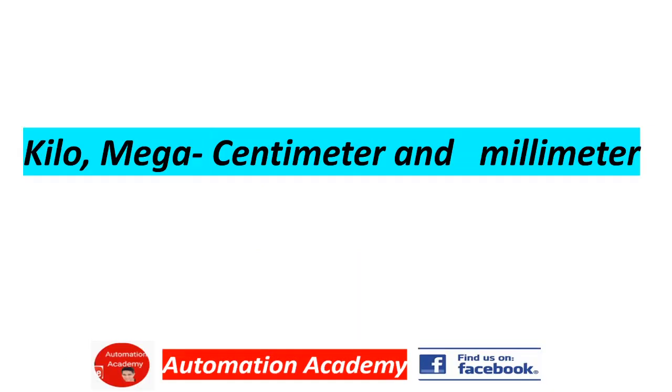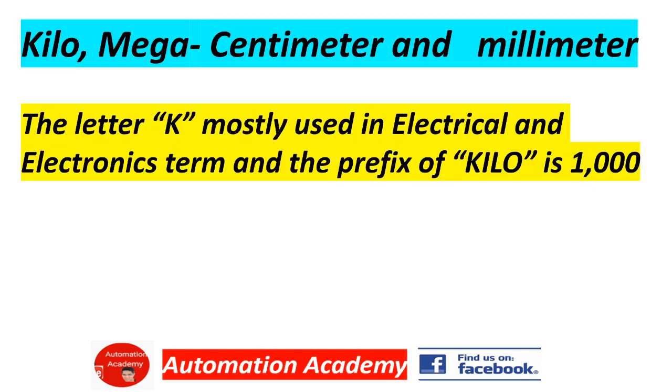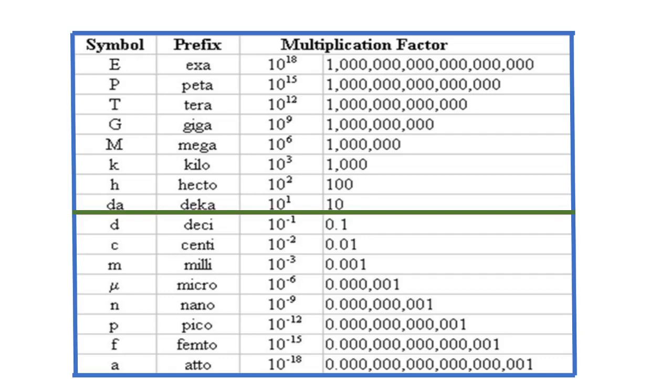Our next topic is kilo, mega, centimeter, and millimeter. The letter K is mostly used in electrical and electronics terms, and the prefix of kilo is 1,000. We have here a sample of symbol, prefix, and multiplication factor. For example: E, exa, 10 to the 18th power; P, peta, 10 to the 15th power; T, tera, 10 to the 12th power; G, giga, 10 to the 9th power; M, mega, 10 to the 6th power; K, kilo, 10 to the 3rd power; H, hecto, 10 to the 2nd power; Da, deka, 10 to the 1st power.